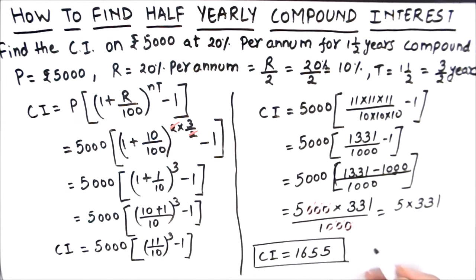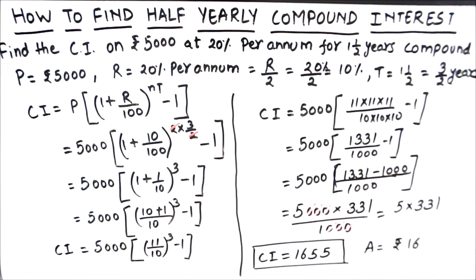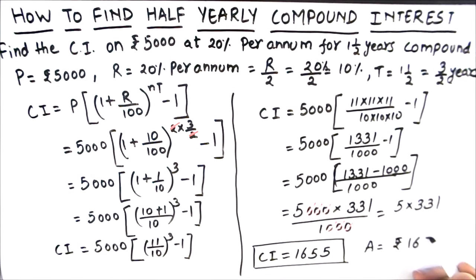So our final answer is: Compound Interest = Rs. 1,655. This is how you can find the compound interest which is compounded half yearly.